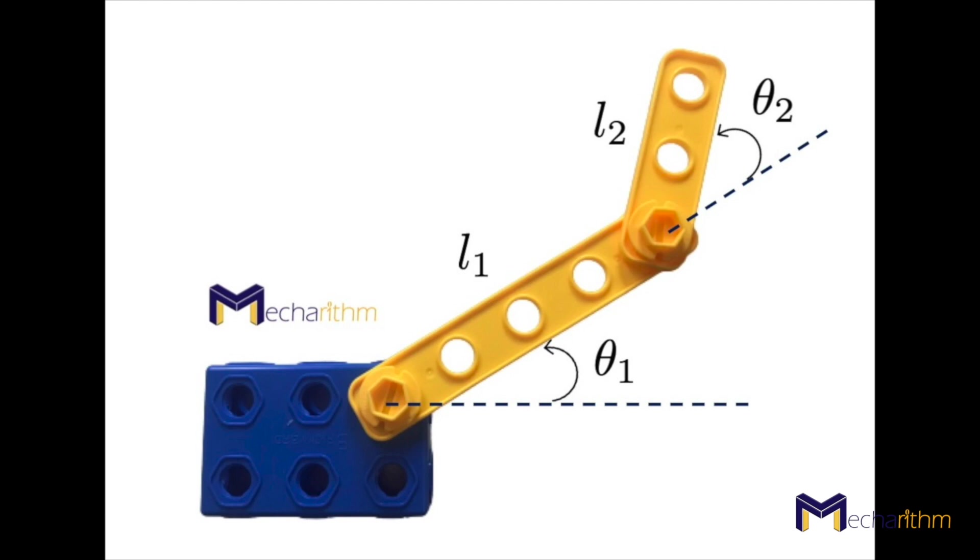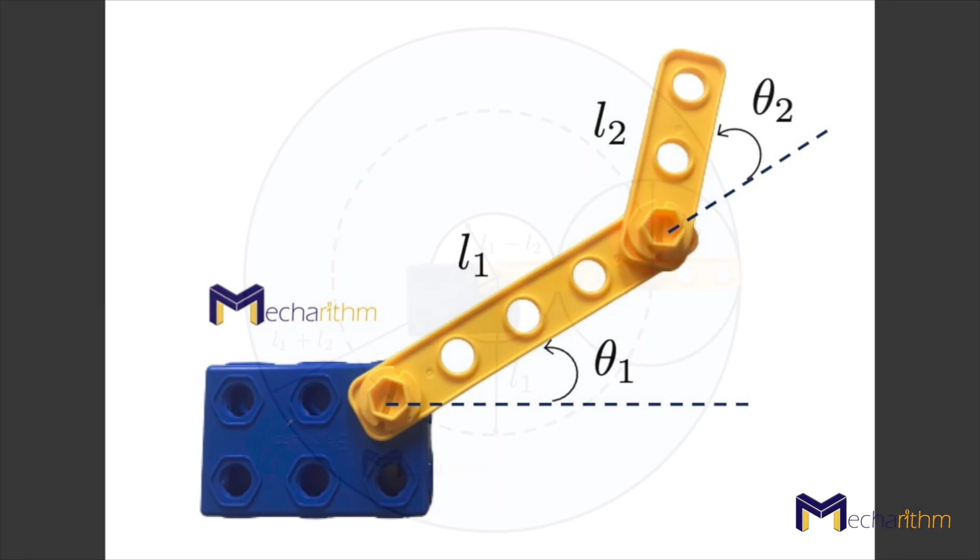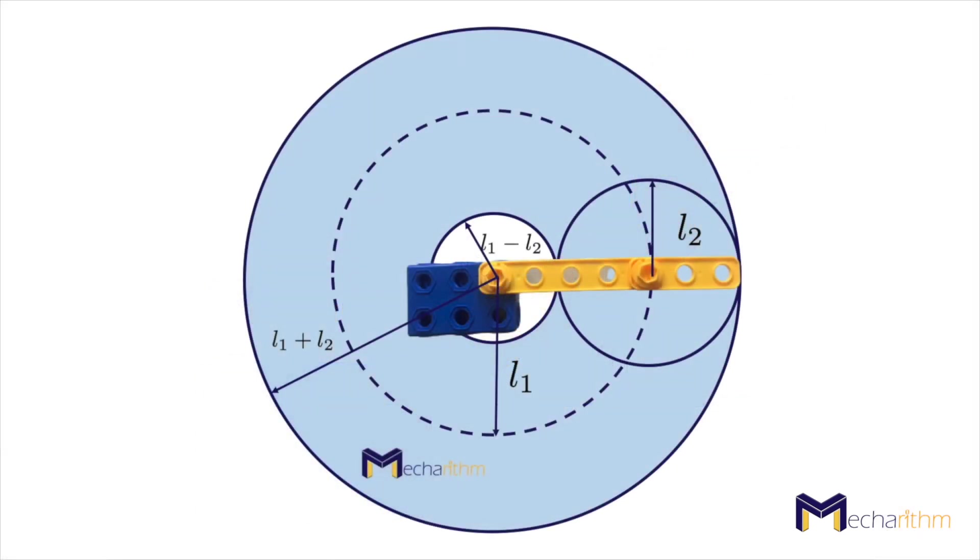The workspace of this robot, if we don't impose any limitations on the joint angles, meaning that both angles can be freely changed from zero to two pi, can be visualized like this figure. You can see that the workspace of a 2R planar robot arm with no limits on the joint angles and with different link lengths is an annulus or a ring, and that is the area between two concentric bounding circles.